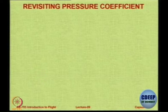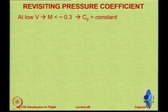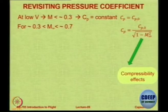Let us revisit the pressure coefficient to get an understanding. At very low speeds — Mach number up to approximately 0.3 — you can assume Cp to be constant, equal to some Cp0, and it does not change with Mach number. When you go beyond Mach 0.3 and up to around Mach 0.7, the Cp starts changing, actually reducing. The formula called the Prandtl-Glauert rule is a very simple formula that correlates the Cp at any Mach number with Cp at very low Mach number, because of compressibility effects.